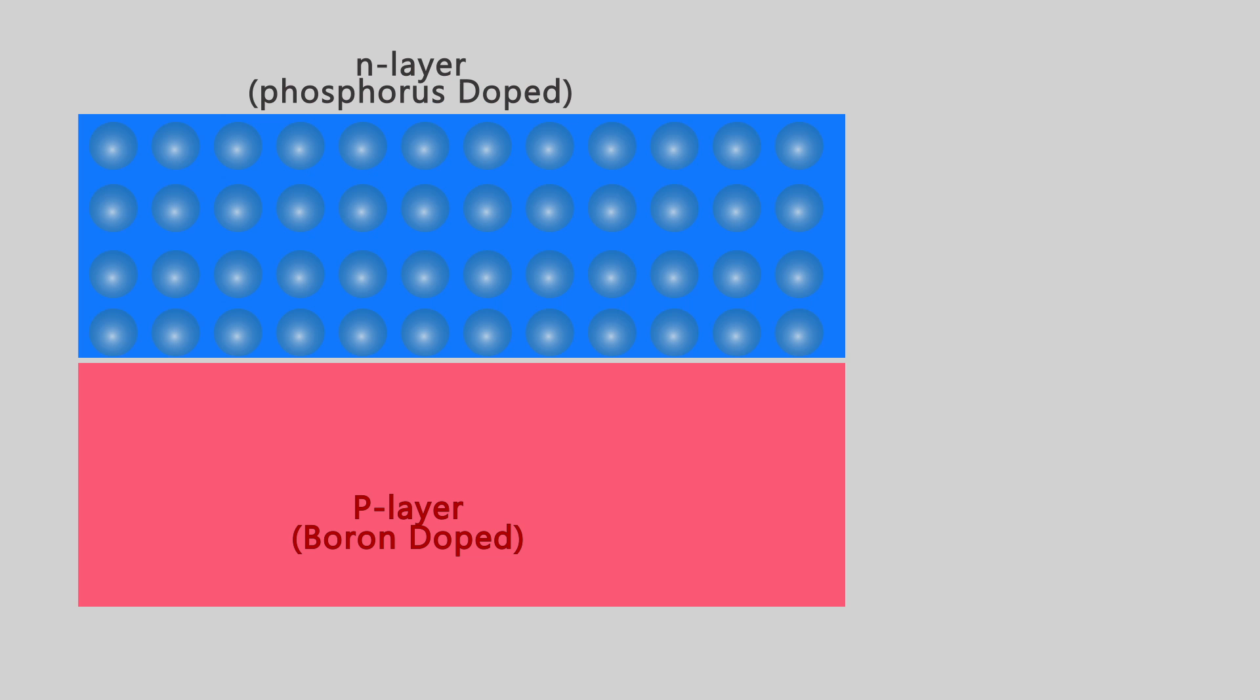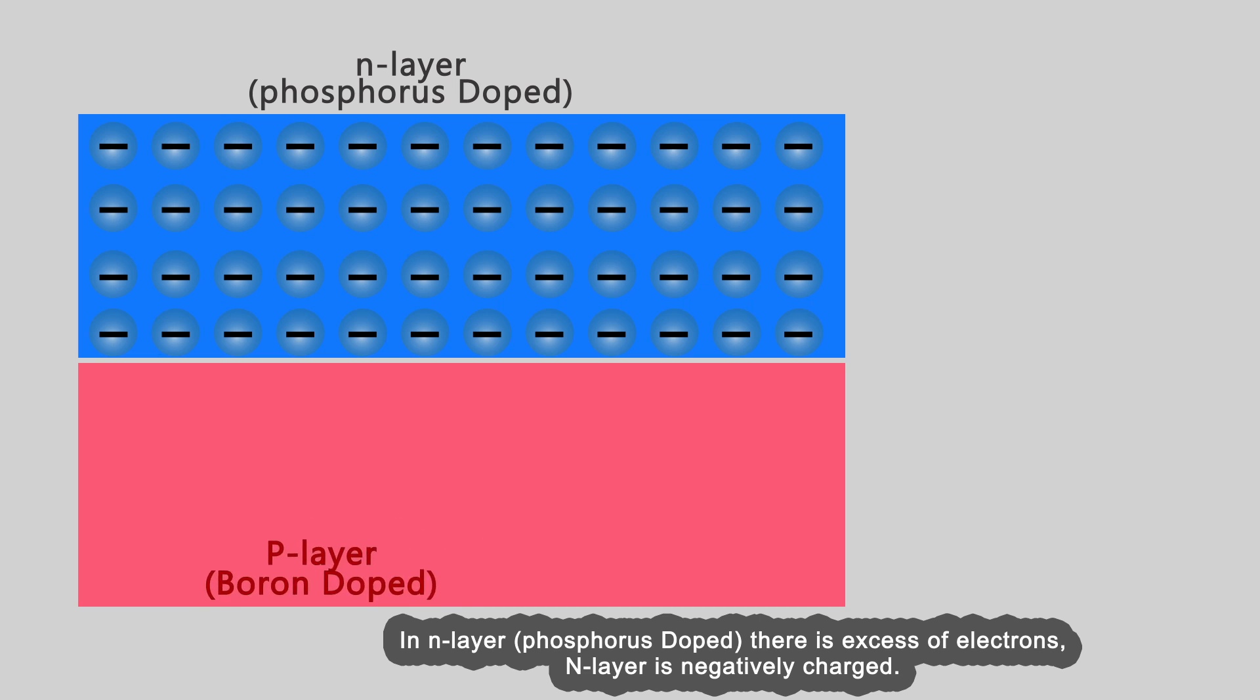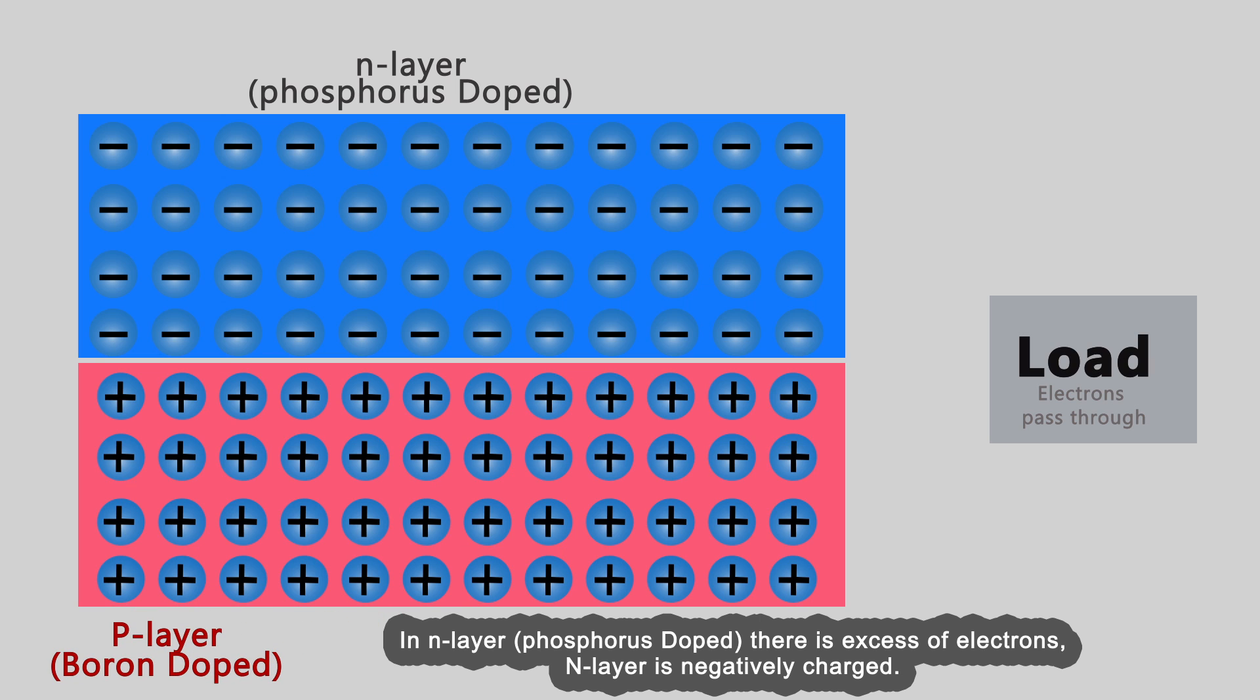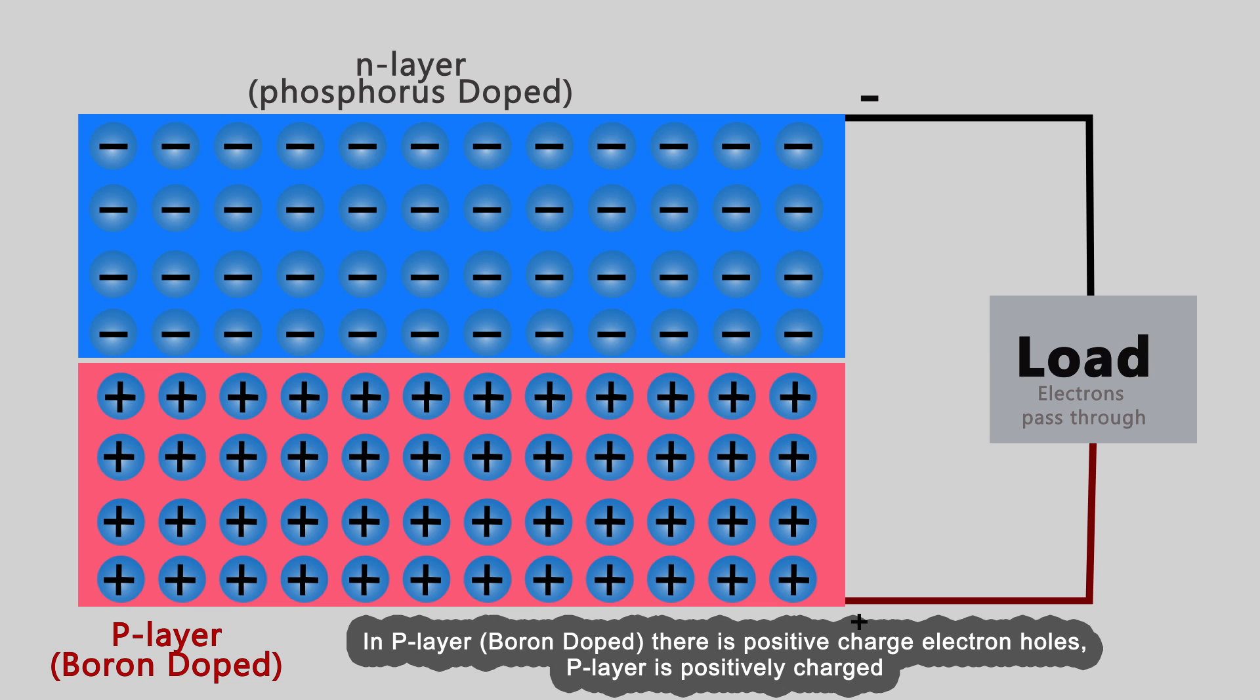In n-layer phosphorus doped, there is an excess of electrons. The n-layer is negatively charged. In p-layer boron doped, there is positive charge from electron holes. The p-layer is positively charged.